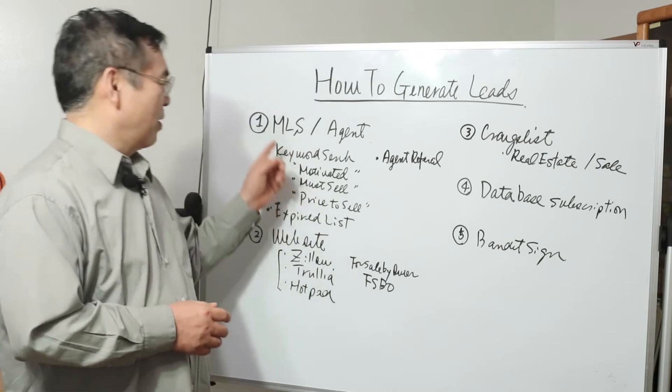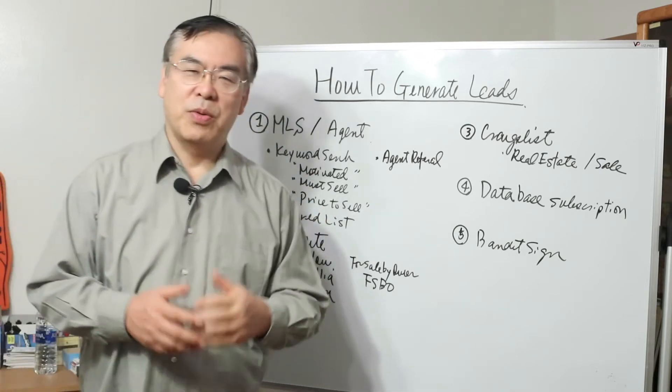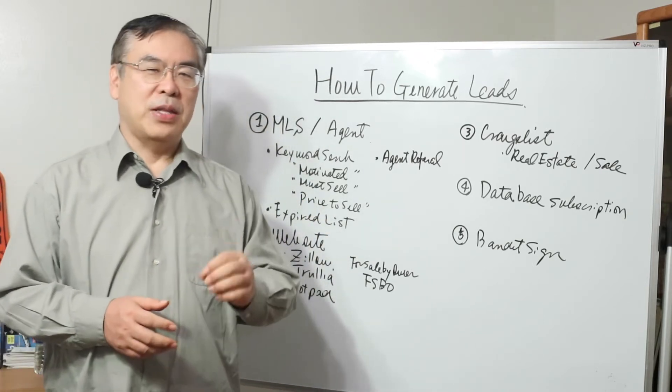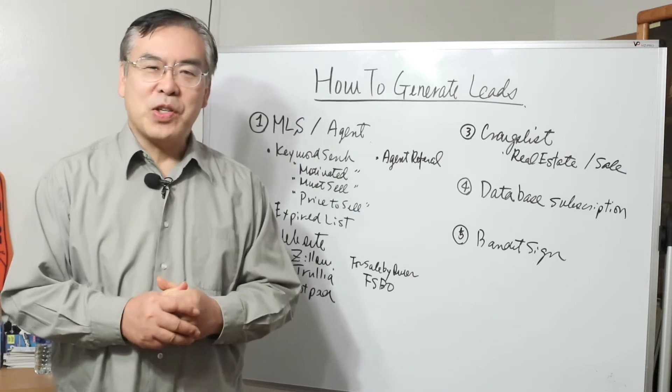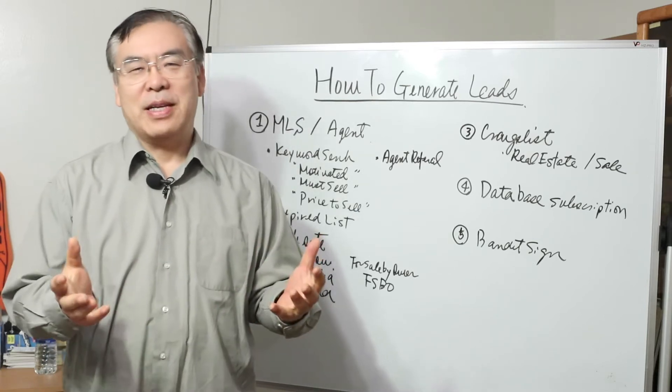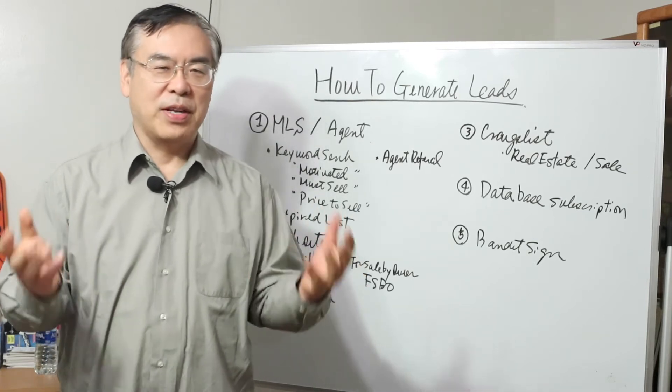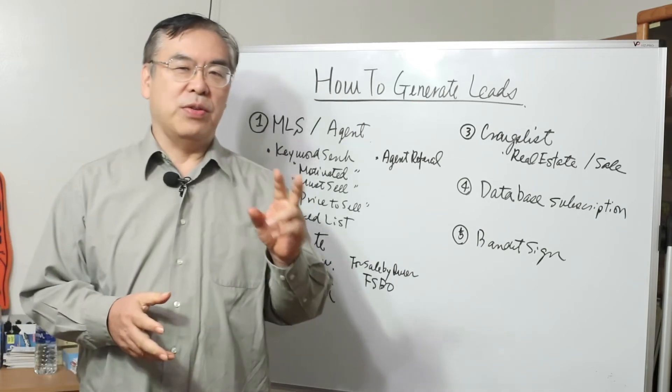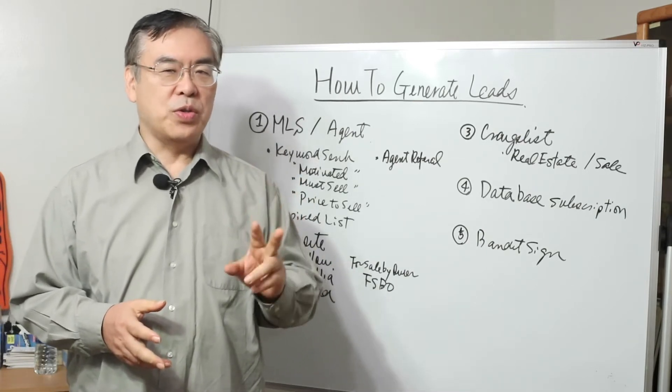First, MLS, also working with the agent. Multi-listing service. As an investor, we cannot buy property at market price. Of course, we have to get a good price. There are two different ways to use MLS.